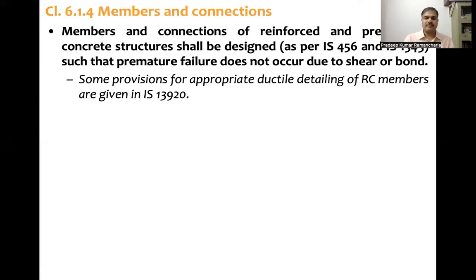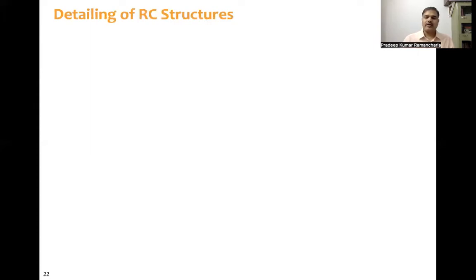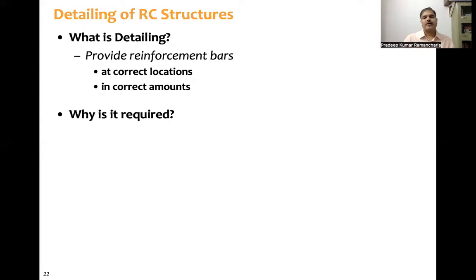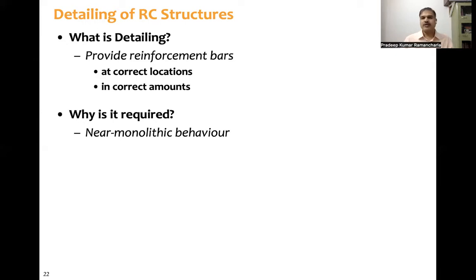What are the salient provisions in IS-13920? First, what is detailing? Detailing means providing reinforcement bars at correct locations and in correct amounts. Why is detailing required? It is required to get near-monolithic behavior of members, particularly at joints — such as beam-column joints and column-footing joints — to achieve good seismic behavior.